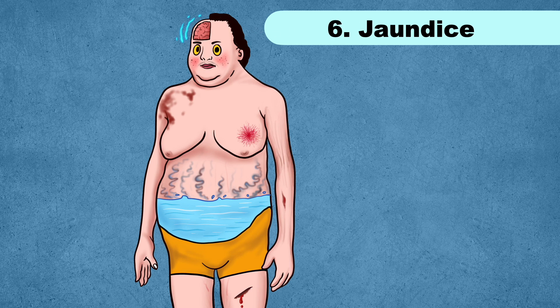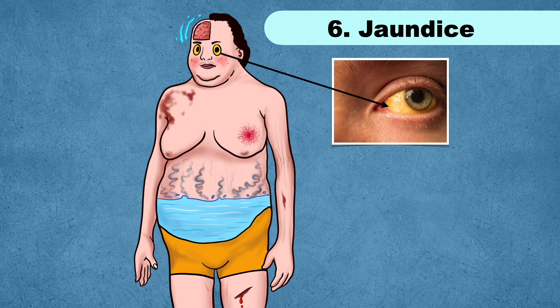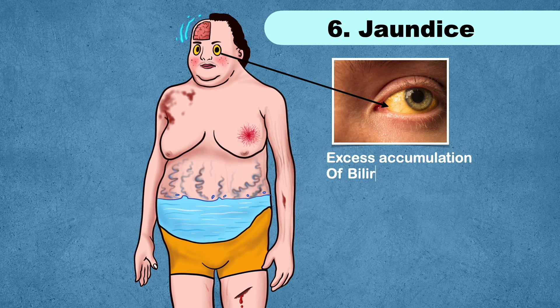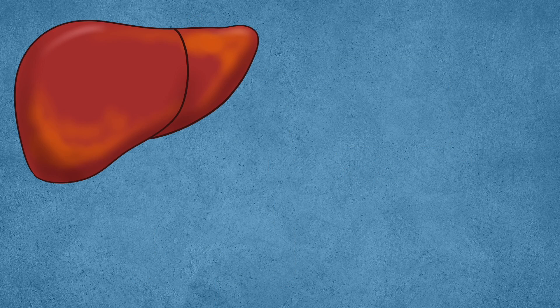Jaundice is another important sign — a condition that causes your skin and whites of your eyes to turn yellow. This is due to altered liver function and excess accumulation of bilirubin under the skin.